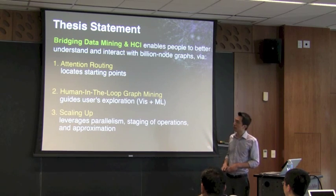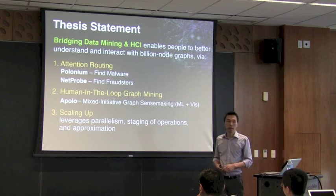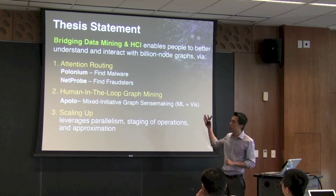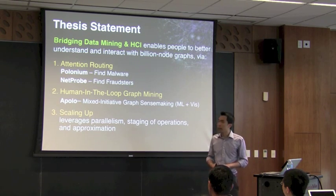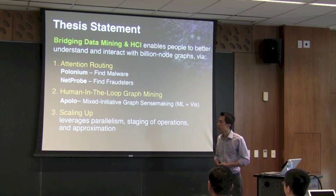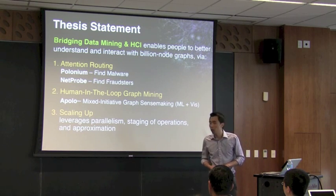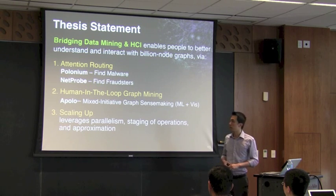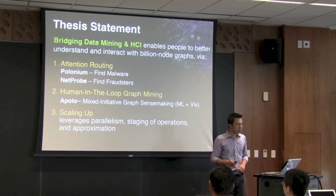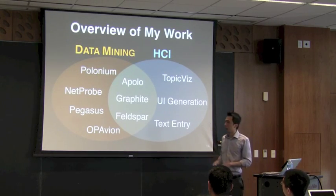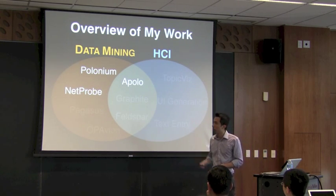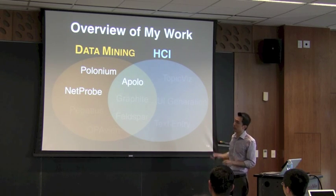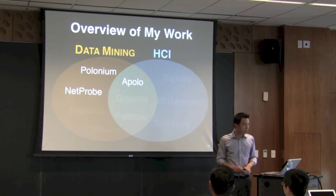This is also the outline of my talk. In the first part I'll give two examples of attention routing — helping people find good starting points. The first is a system called Polonium, which helps people find malware on computers. The second is called Netro, to help find fraudsters in online auctions. In the second part, about incorporating user feedback into graph mining, I'll discuss a system called Apollo, which combines visualization and machine learning to support data exploration.